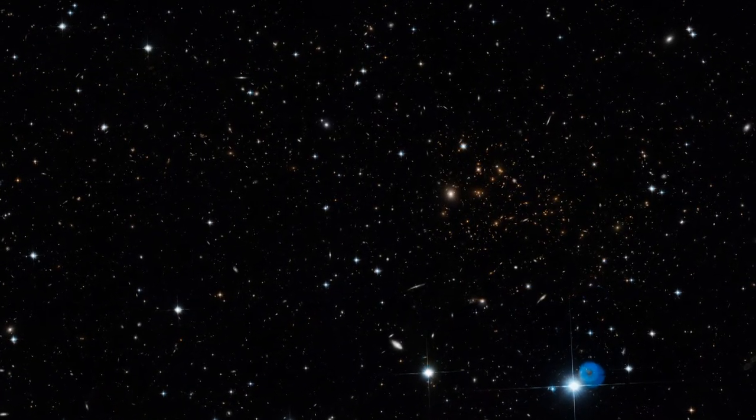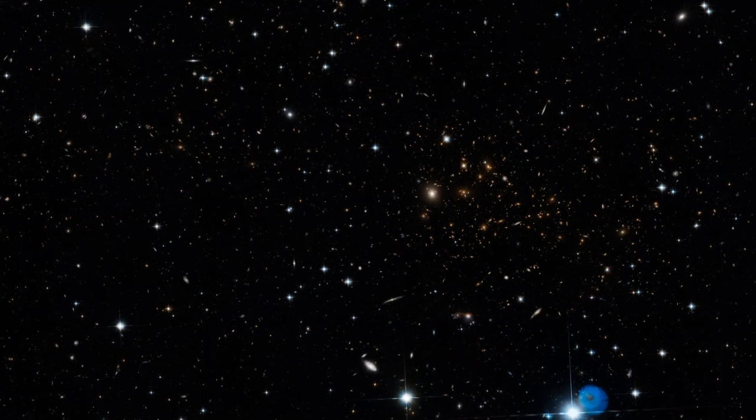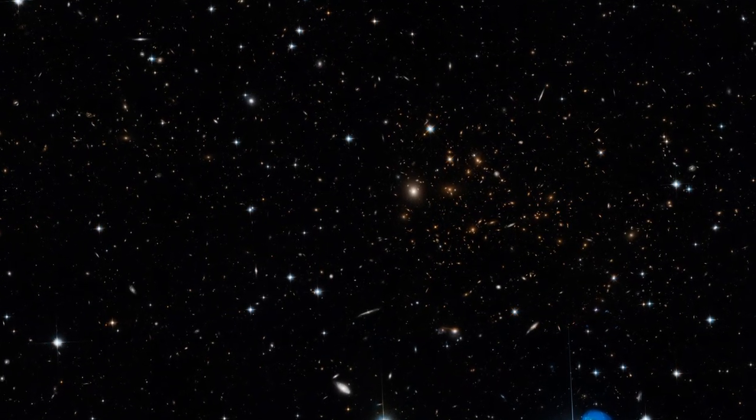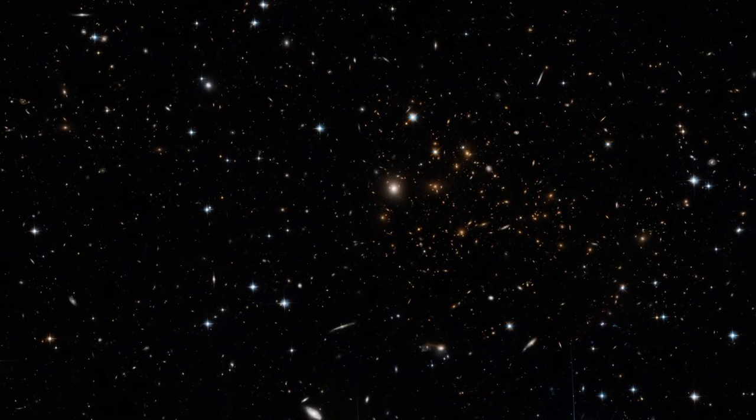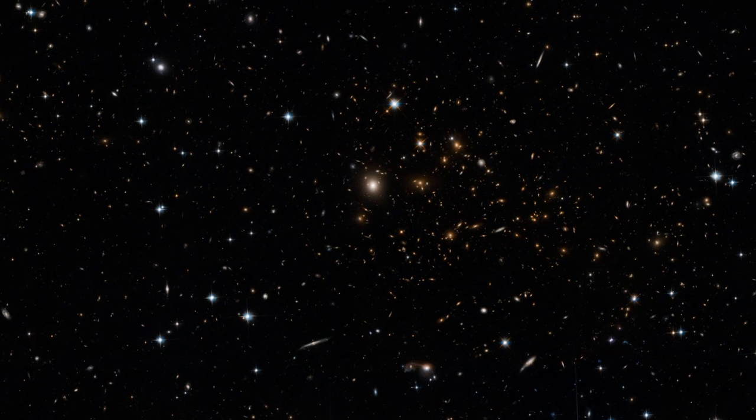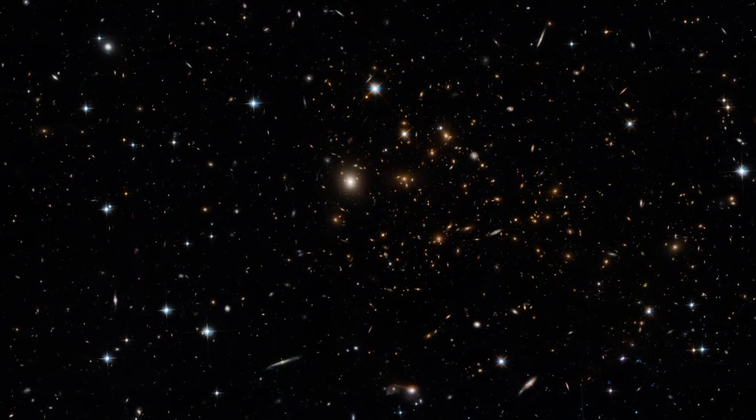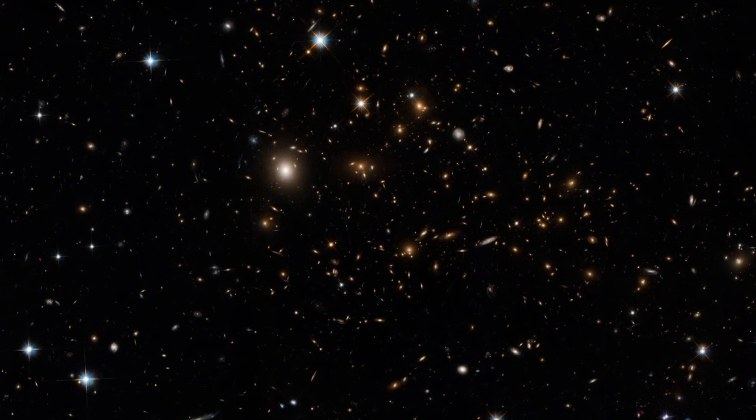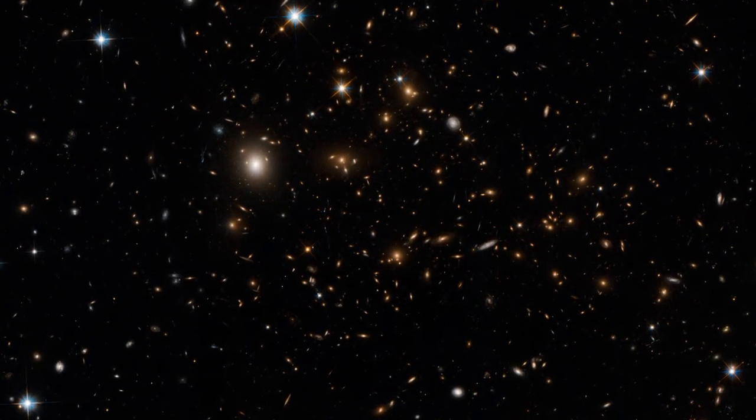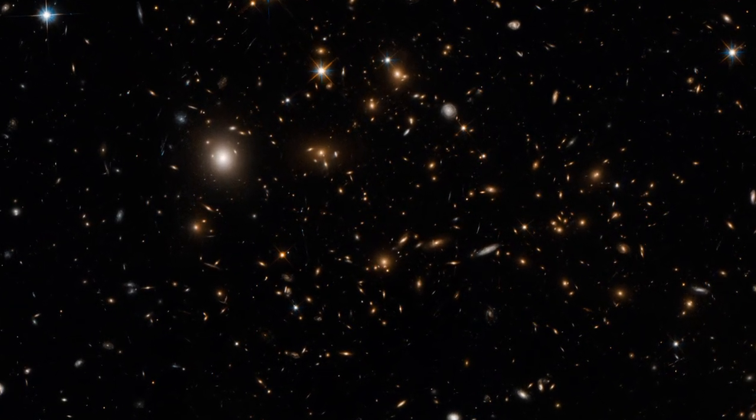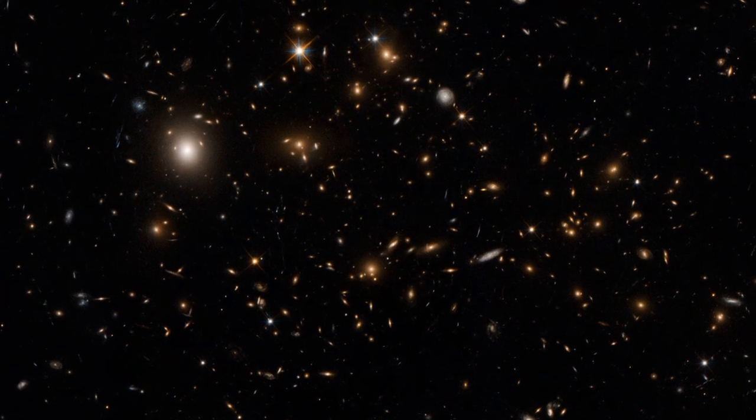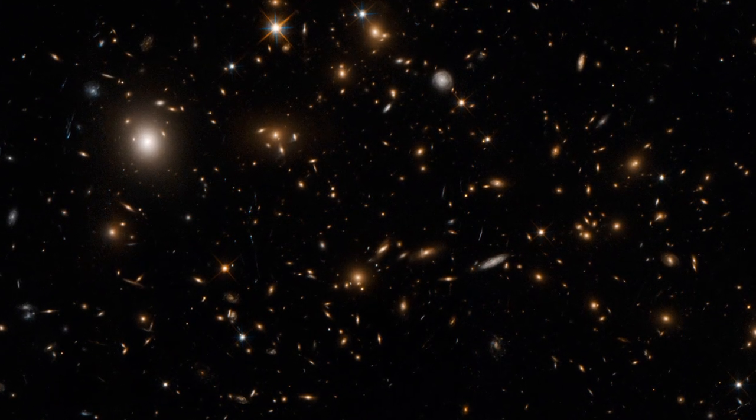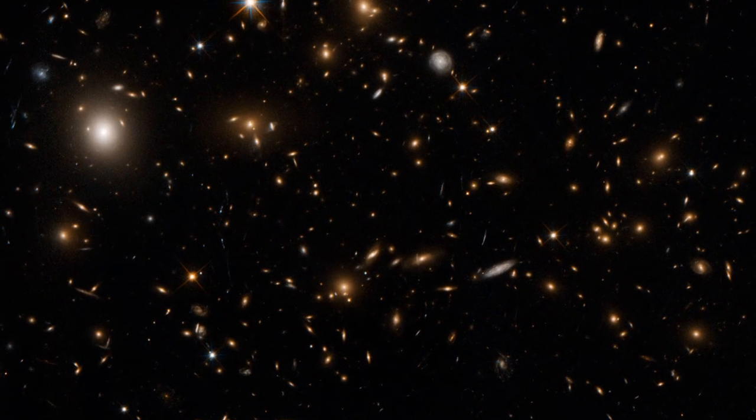Finding one of these filaments is no easy task. First, you need to look where you're likely to find one. Theories say galaxy clusters form where filaments of the cosmic web meet, with the filaments gradually funneling galaxies and dark matter into the clusters. So, the team focused Hubble on the galaxy cluster MACS J0717, which is known to still be growing.